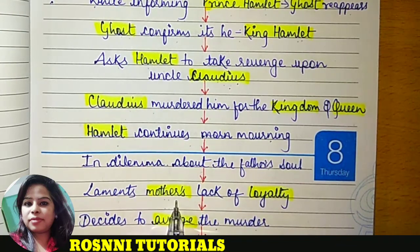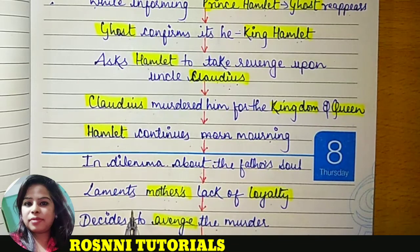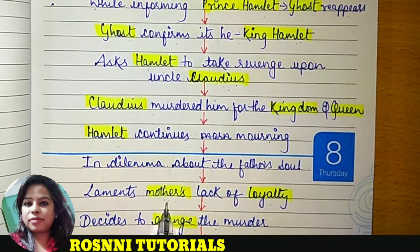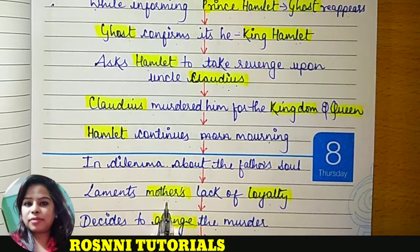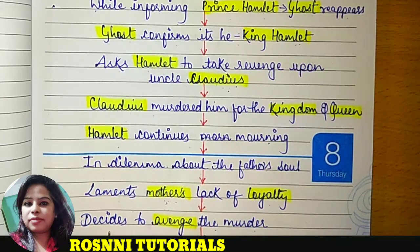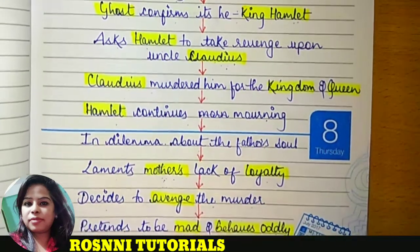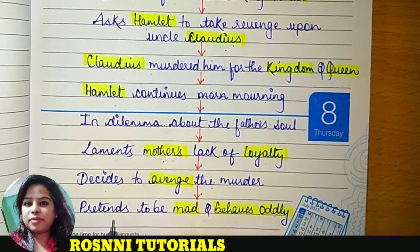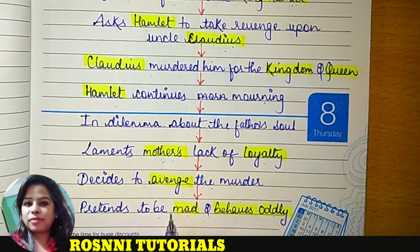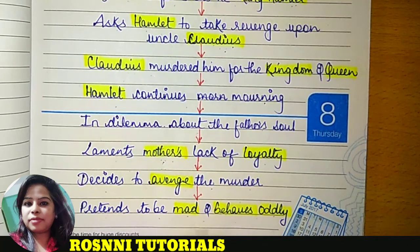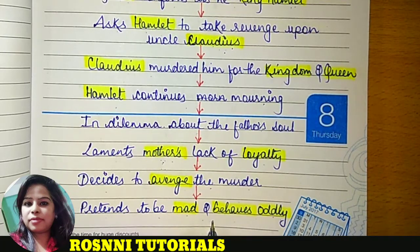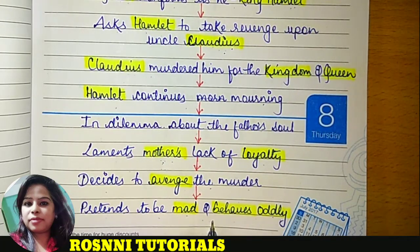Hamlet also laments over the lack of loyalty of his mother, because she got married with uncle Claudius soon after the death of King Hamlet, which Prince Hamlet did not like. Now Hamlet decided to take revenge upon uncle Claudius. He pretended to be mad and behaved oddly as part of his plan — he became eccentric, though not literally mad, just pretending. His motive was to understand the true nature of Claudius and his mother.